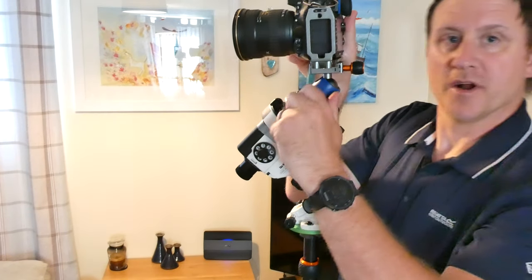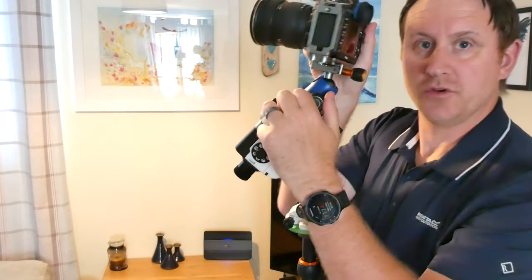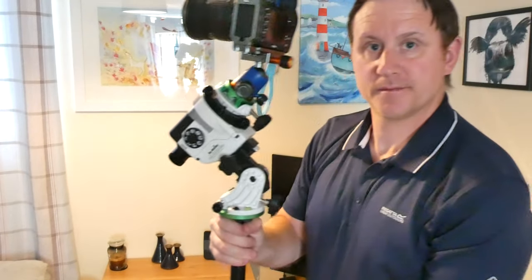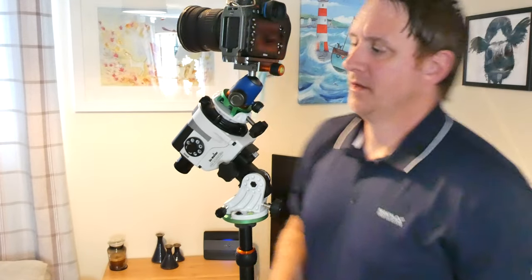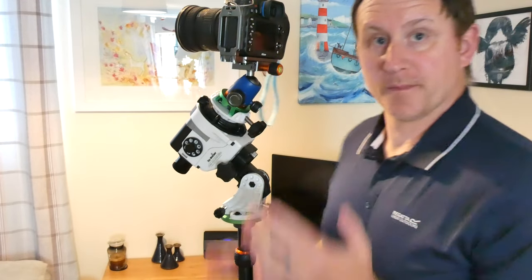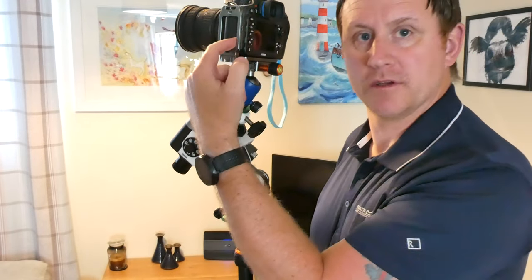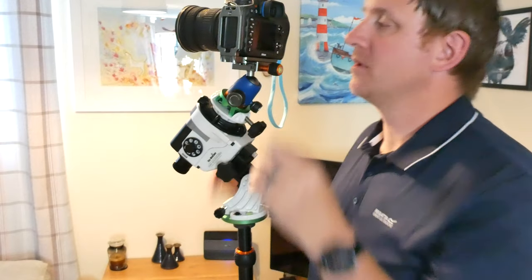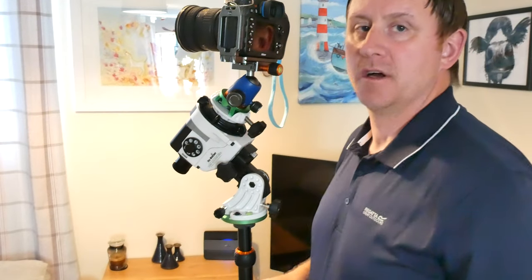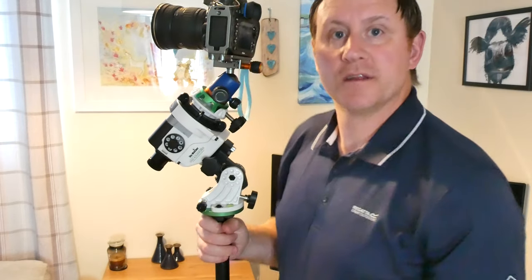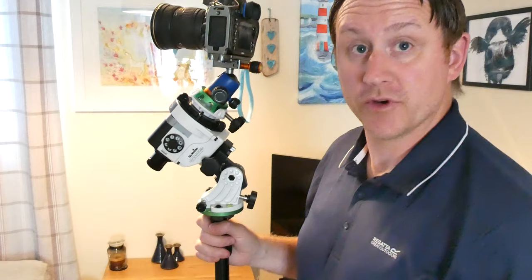You just need to move it around for whatever composition you want to take your exposures. Once you're set for your composition, the next thing I would be doing is attaching my remote release shutter cable on the side so I don't have to touch the camera. Do my settings and then ready to take my test shots.